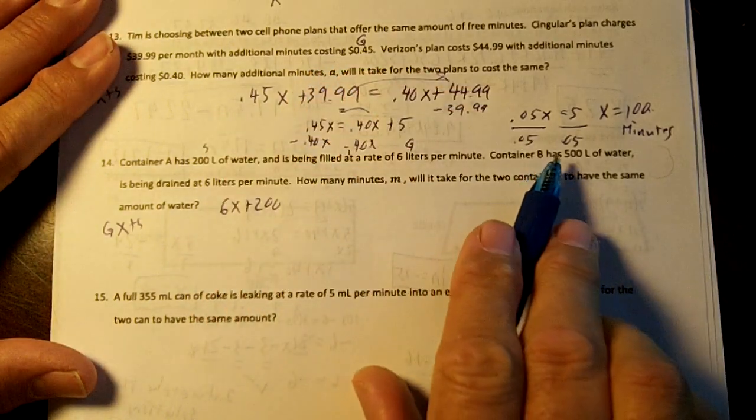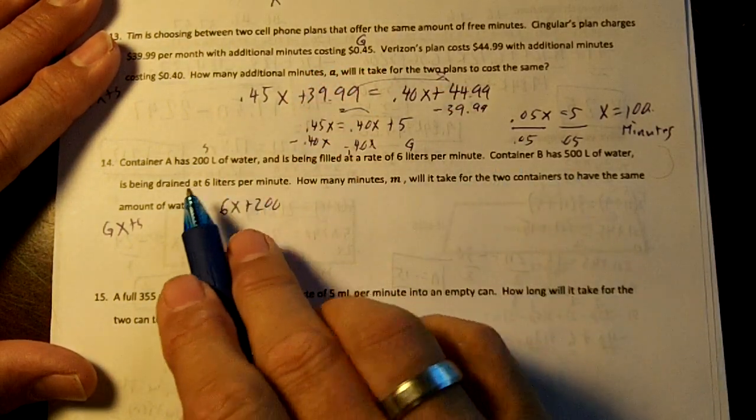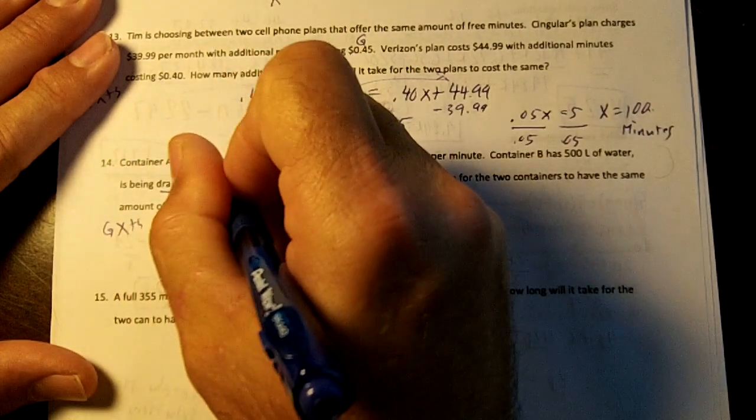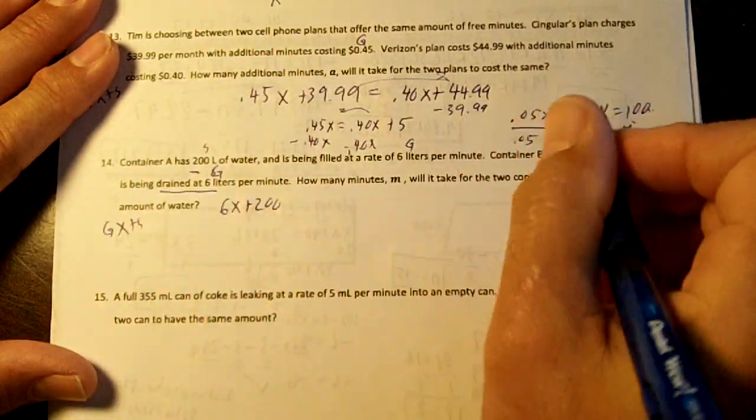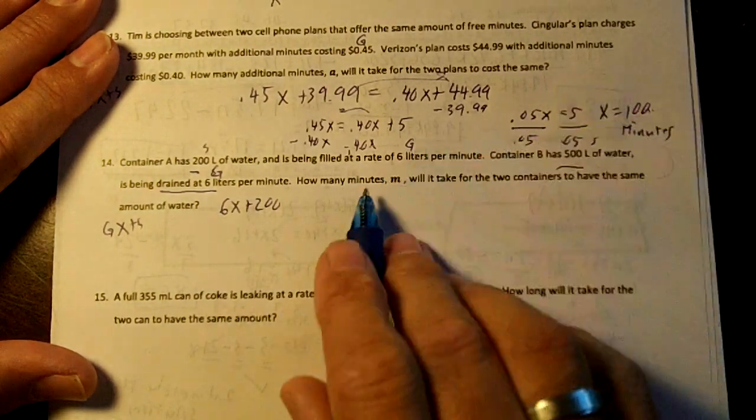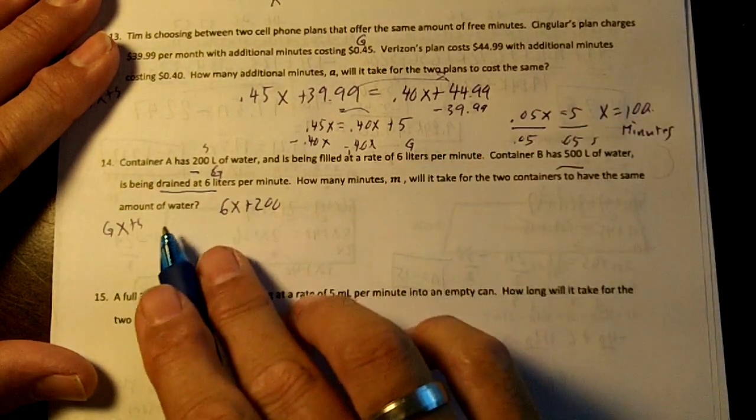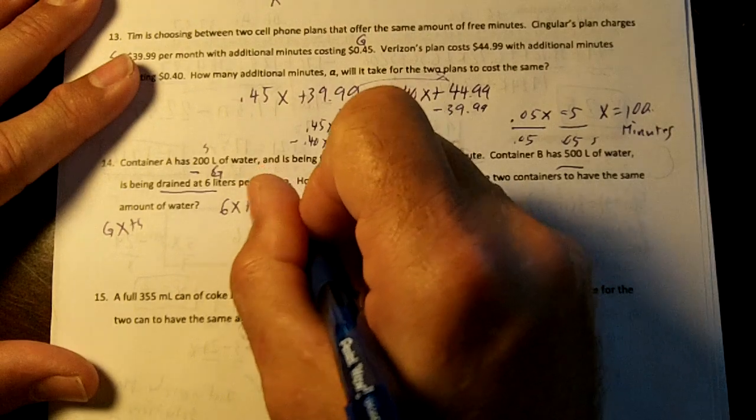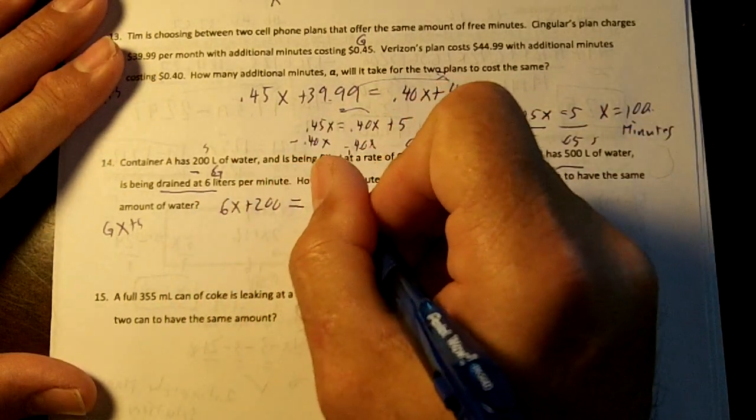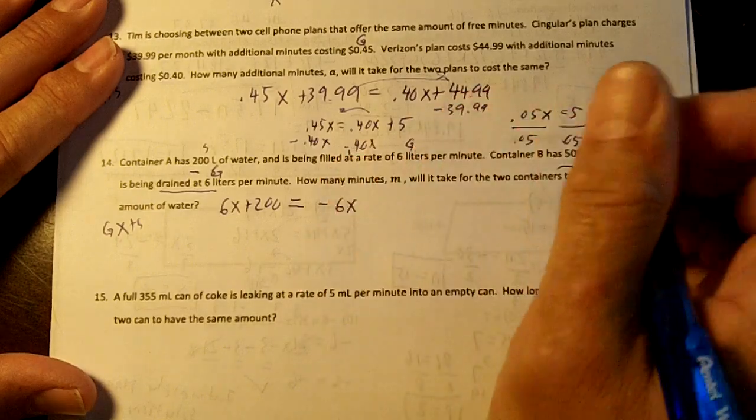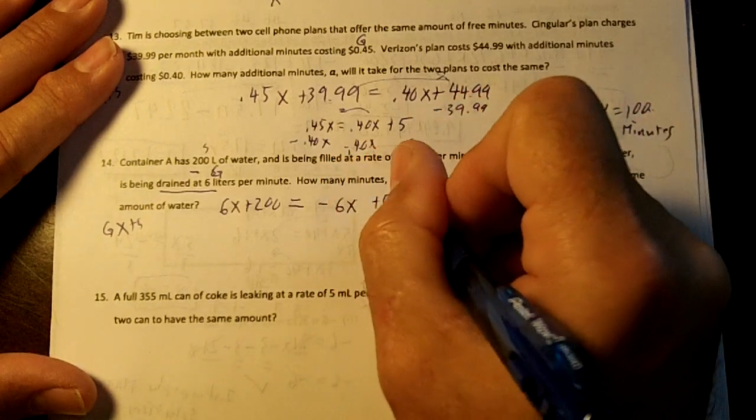Container B has 500 liters of water and is being drained. If it's being drained, it's going to be a negative growing number. So this is our growing number. This is our starting number. How many minutes will it take for the containers to have the same amount of water? We're going to equal them. And so this will be negative 6X plus 500.